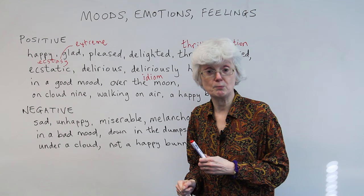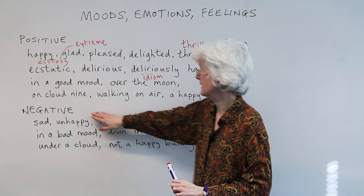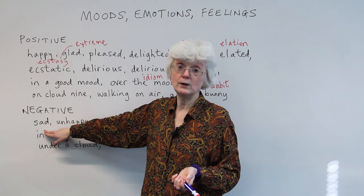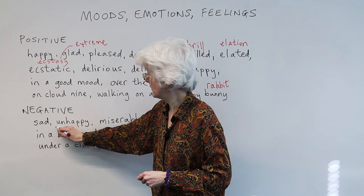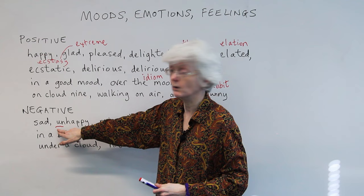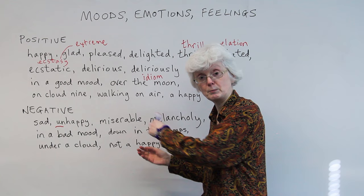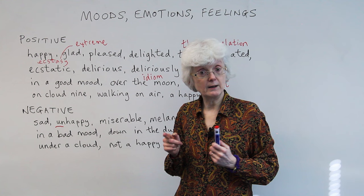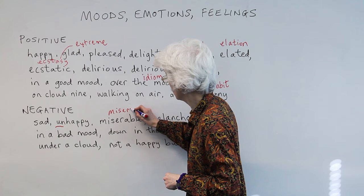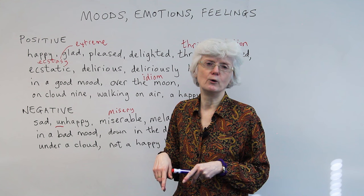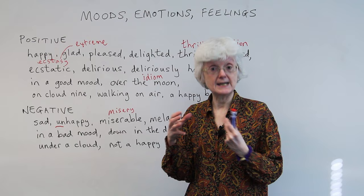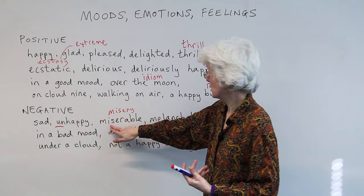So let's move on now to the negative ones. 'Sad' is probably the one you know best — the first word you learn for negative feelings. 'Unhappy' — we've got 'happy' and the prefix 'un-' makes it negative: 'unhappy.' And now going a little bit more extreme with 'miserable.' The noun is 'misery' — the condition of being miserable. You can even call somebody 'a misery': 'Oh, that woman, she is a misery.' Miserable is getting more extreme than just sad.